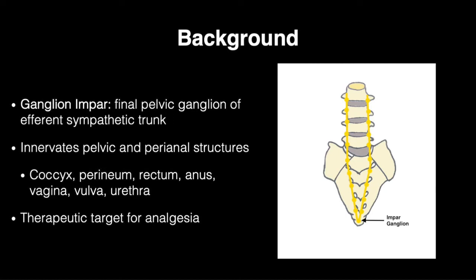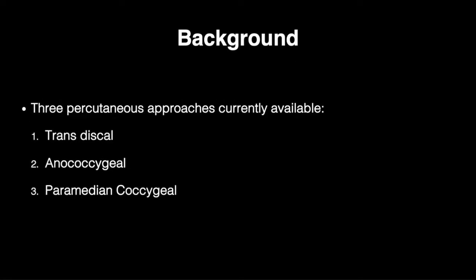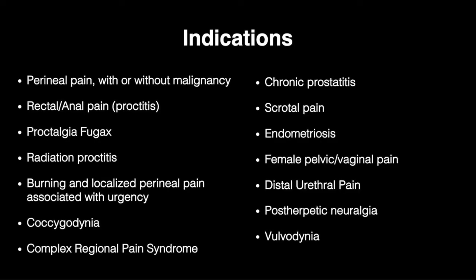As a result of its location and innervation pattern, the ganglion impar serves as an analgesic therapeutic target. There are currently three recognized percutaneous approaches targeting the ganglion impar nerve described within the anesthesia and pain literature: the transdiscal, anococcygeal, and perimedian methods.